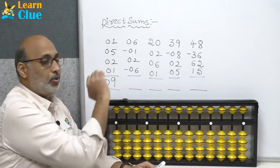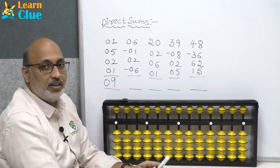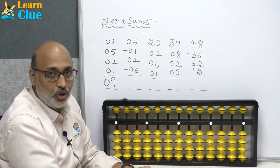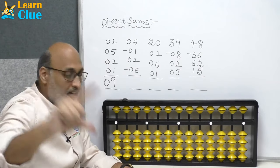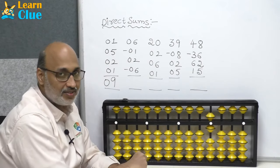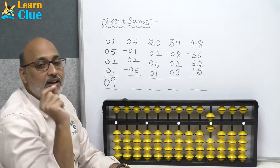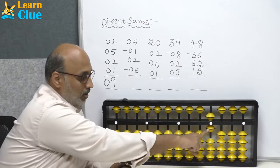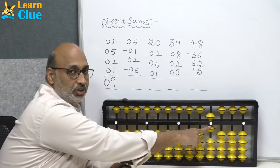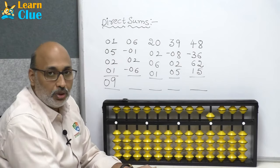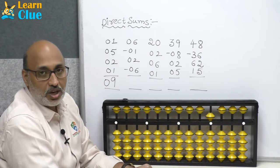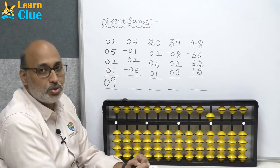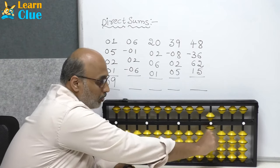Clear the abacus. Next problem: the first number is 6. Six is a butterfly number, so use these two fingers at a time — like this — 6. Now they are asking minus 1. There is already one bead in the added position; pull it down to subtract. Now they are asking plus 2 — move 2 beads up with thumb finger.